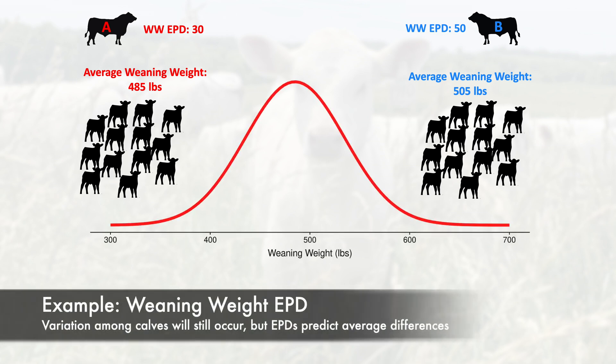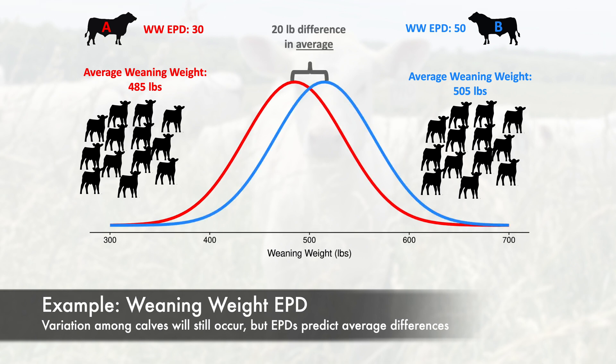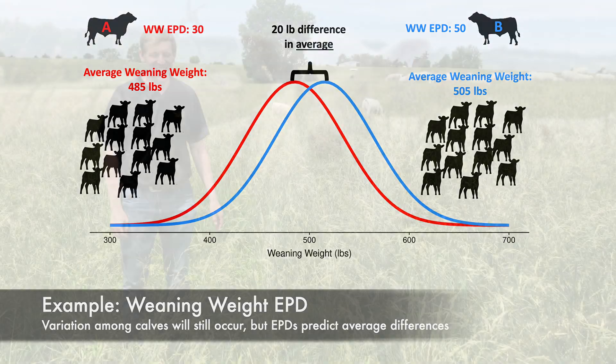Remember, we're talking about averages and not individual calves. There will still be some variation among calves. Some of the calves from Bull A will have heavier weaning weights than some of the calves from Bull B. However, by using weaning weight EPDs we can effectively move the average of the group.